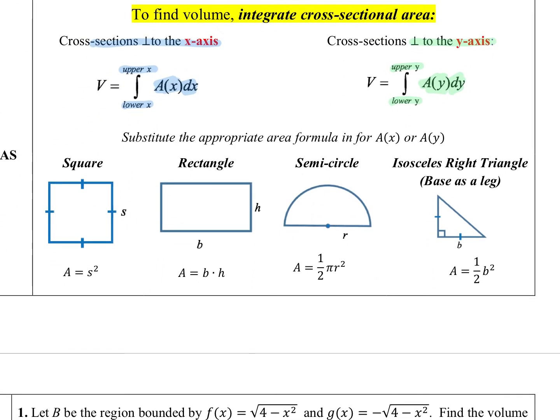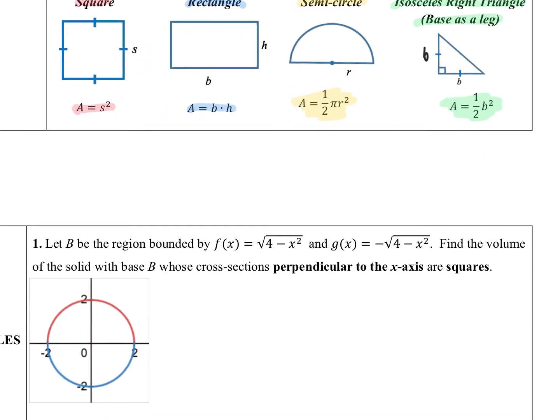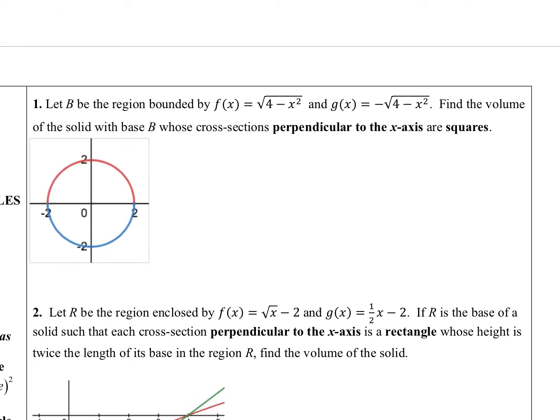You will be told the shape of that cross-section, and that will dictate which of these formulas you use. So if it's a square, there's your square area formula. A rectangle, base times height. Semi-circle is one-half pi r squared. And if you have an isosceles right triangle with the base as a leg, then it's one-half b squared, because this is isosceles. That's what allows me to call this b as well. Let's take a look at an example.